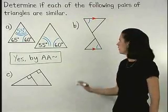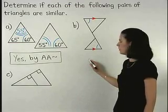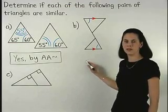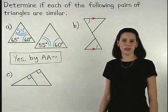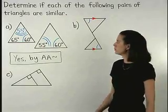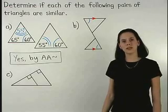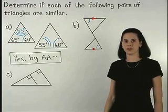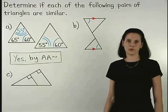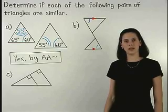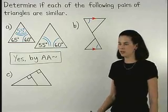Notice, however, that there are no other pairs of angles that can be marked as congruent. So we do not know if these triangles are similar, because we only have one pair of congruent angles. We cannot use the angle-angle similarity postulate. In this situation, we write that the triangle similarity cannot be determined.